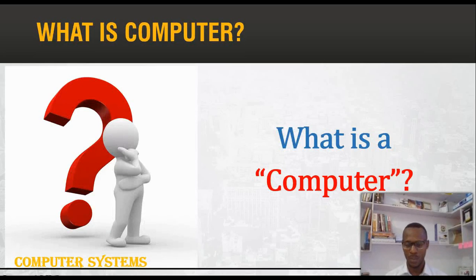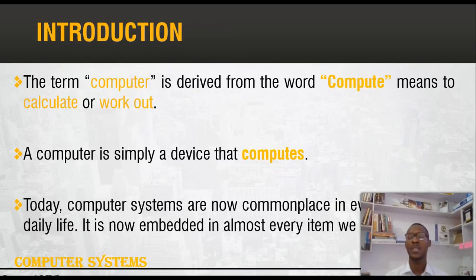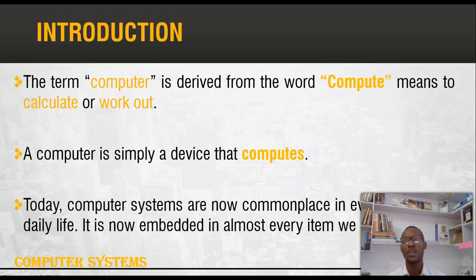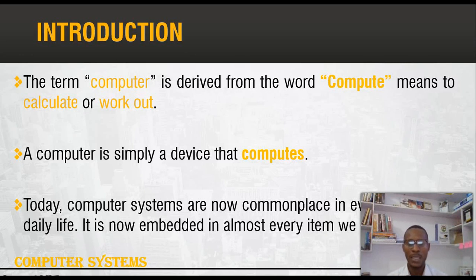Somebody may want to ask: what is a computer? That's the first issue to consider when we venture into a course like this. The word 'computer' actually originated from the word 'compute,' which means to calculate. In the early days, humans were the people who did the calculation jobs, so the first computer systems were actually humans, because they did the computations of data. But because these things were occupying so much time and energy, man had to think of better ways to carry out these computations, and that is why the invention of computer systems came about.